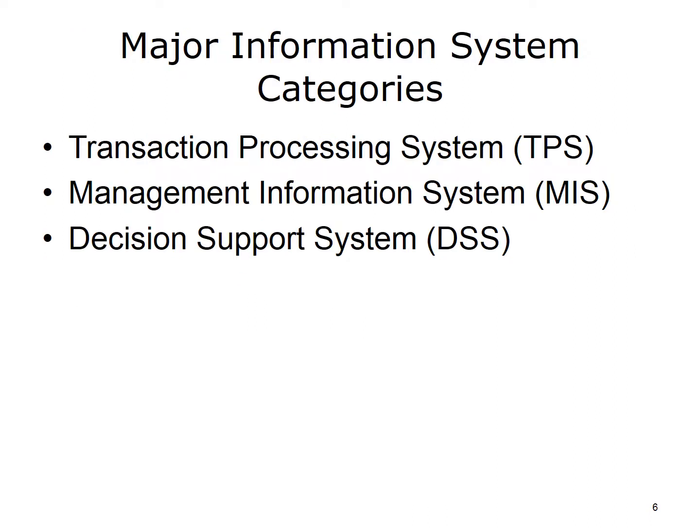With regards to information systems, there are three major categories: Transaction Processing System, Management Information System, and Decision Support System. Each will be defined in the next few slides.